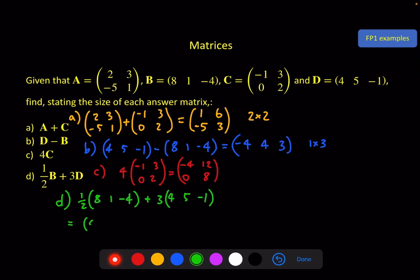And that will give us 4, half, minus 2, plus 12, 15, minus 3, which will equal 16 for the first element. 15 and a half, or 31 over 2 for the second element. And a minus 5 for the third element. And I've done it again. This is a 2 by 2 matrix, and this is a 1 by 3 matrix.